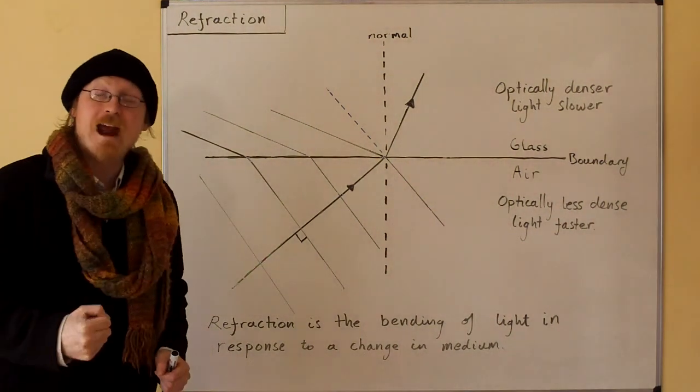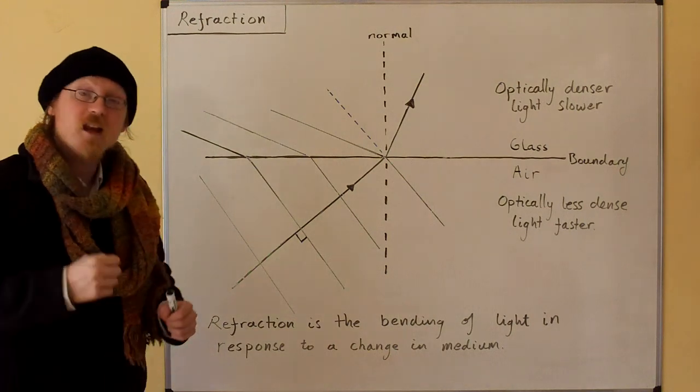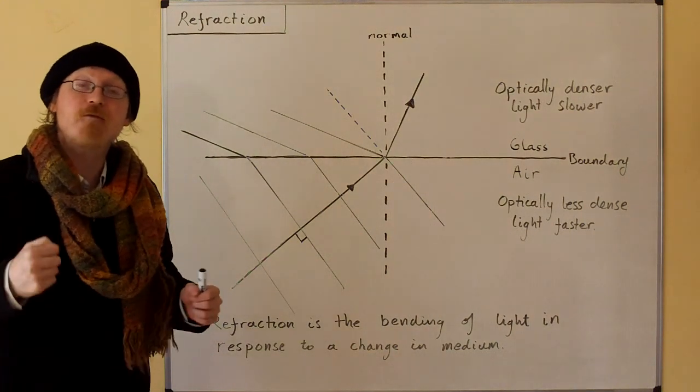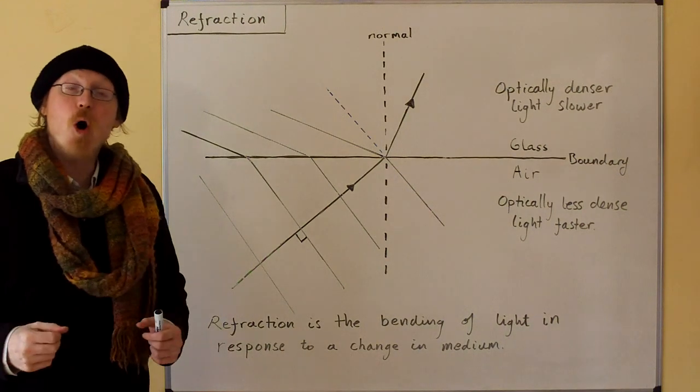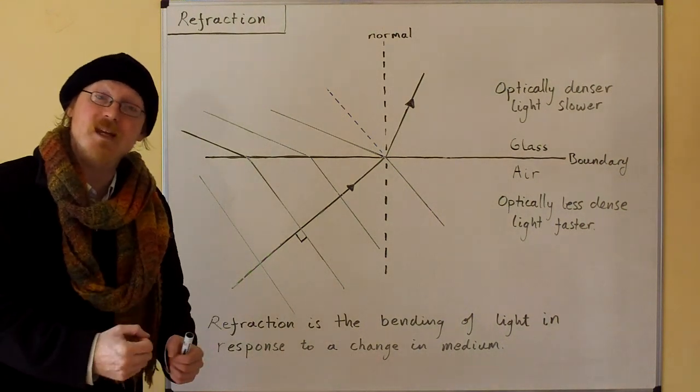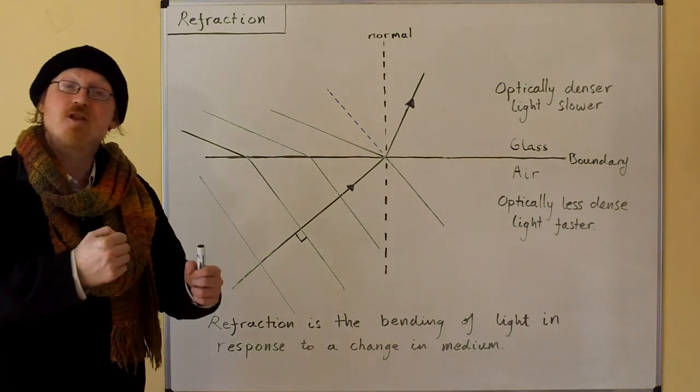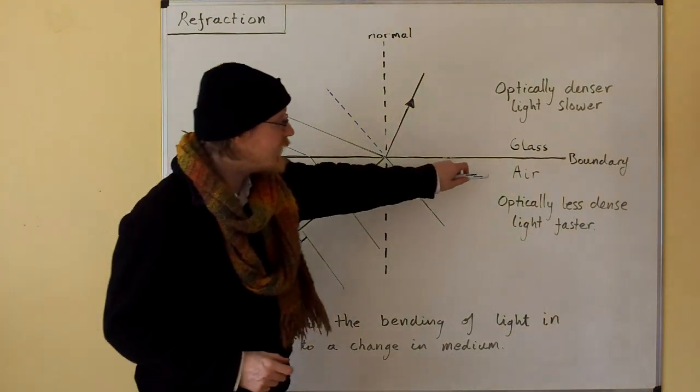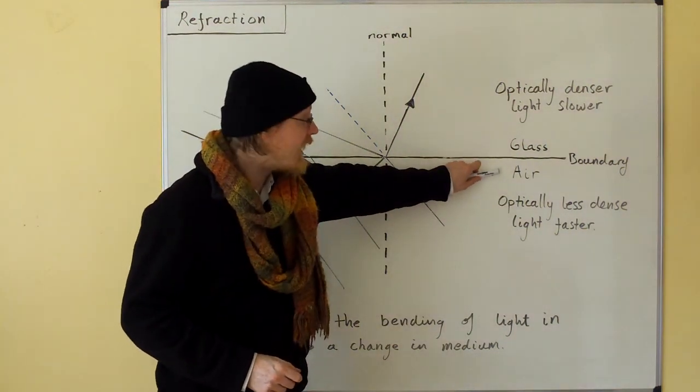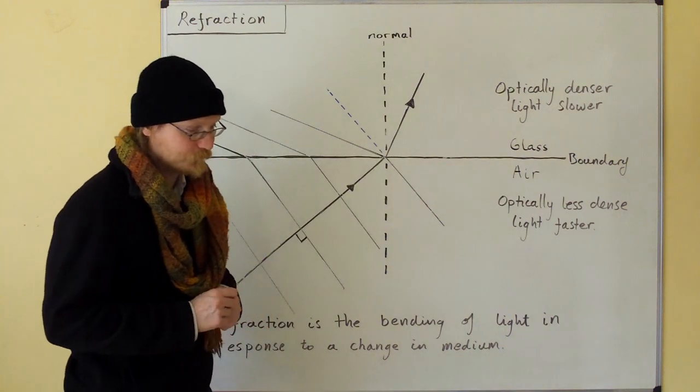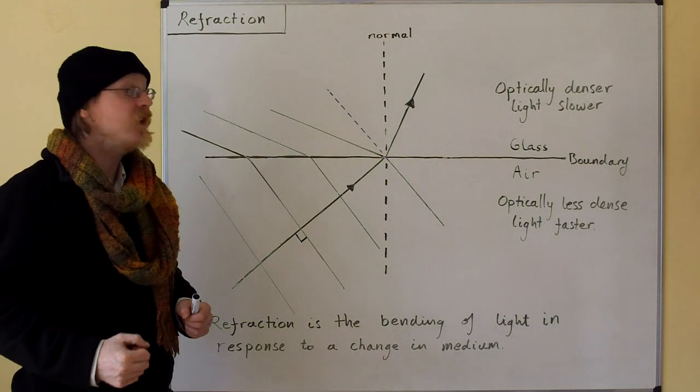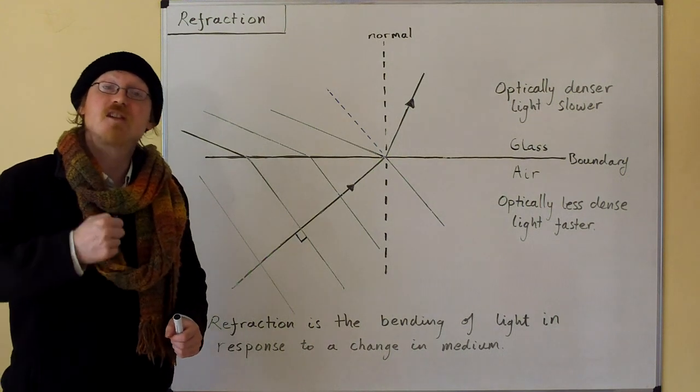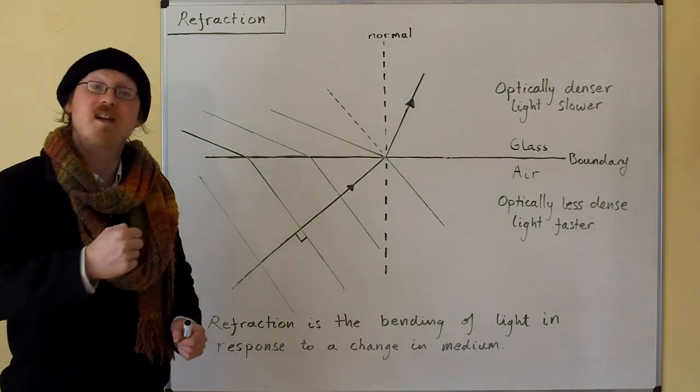Hi, refraction. Now, light travels at different speeds in different media. The more optically dense the medium, the slower light travels. Here we're looking at light traveling from air into glass. Glass is optically denser, so the light is going to travel slower in the glass than it does in the air.